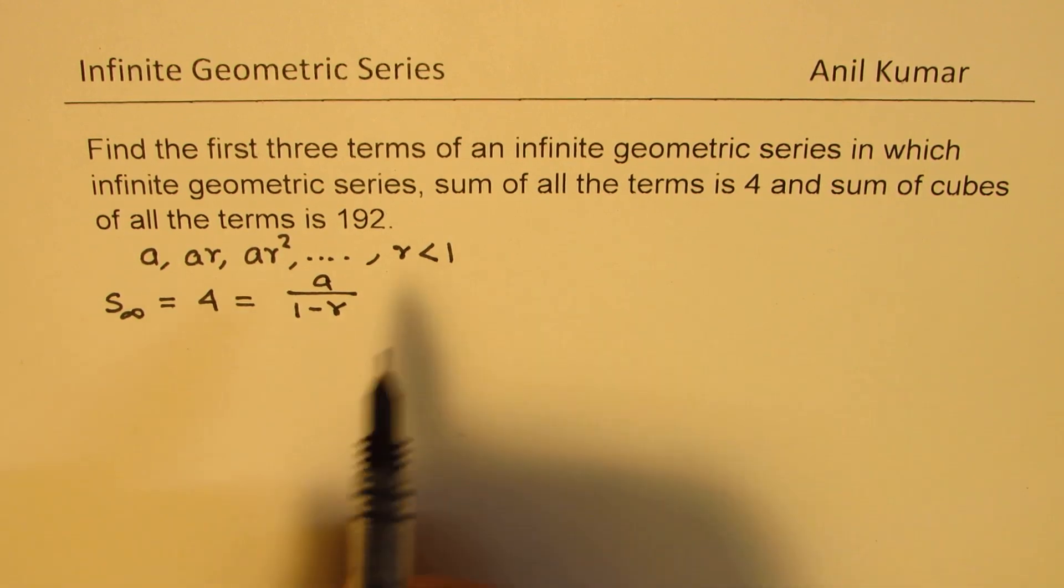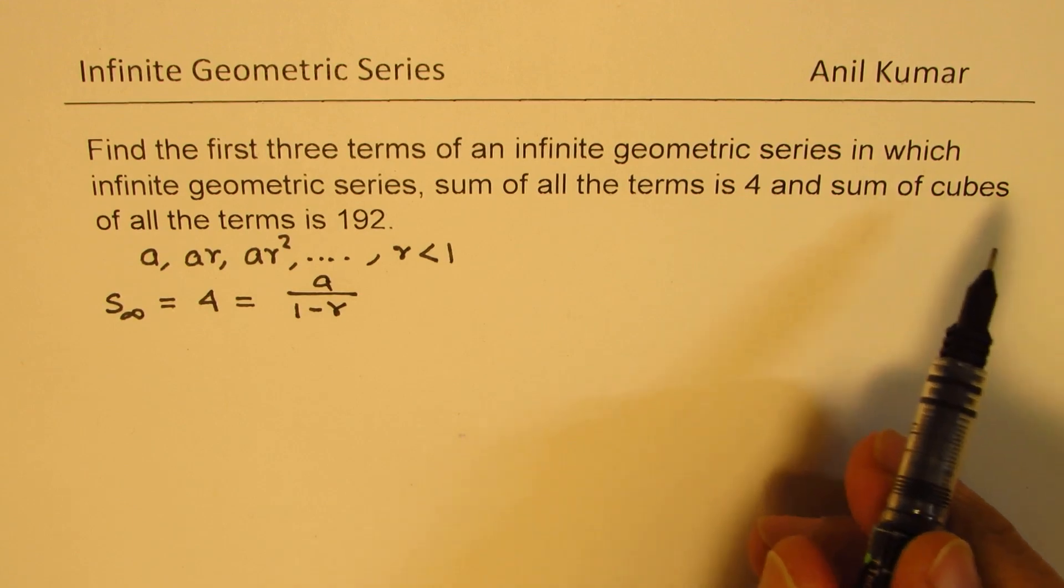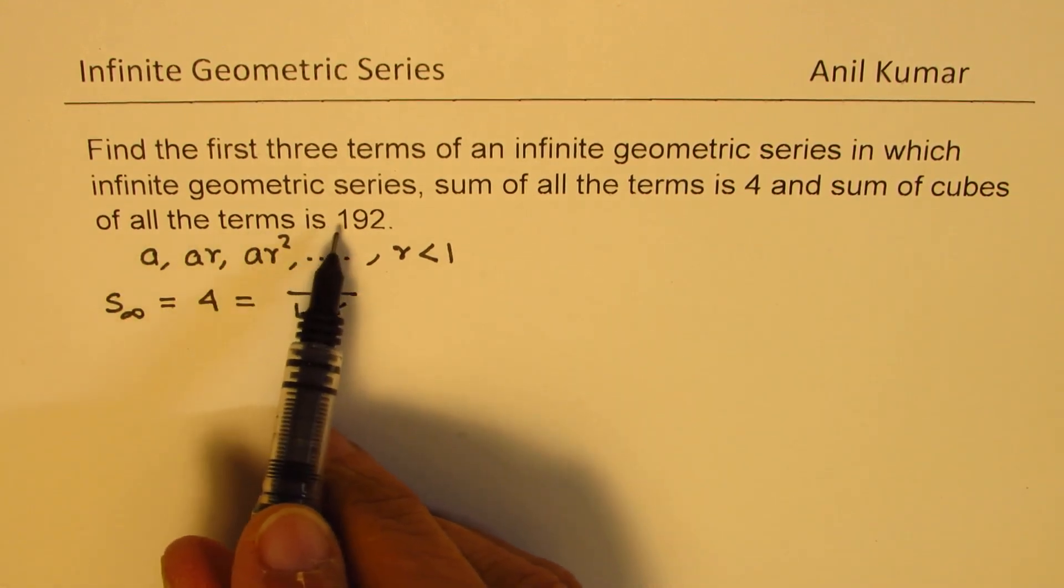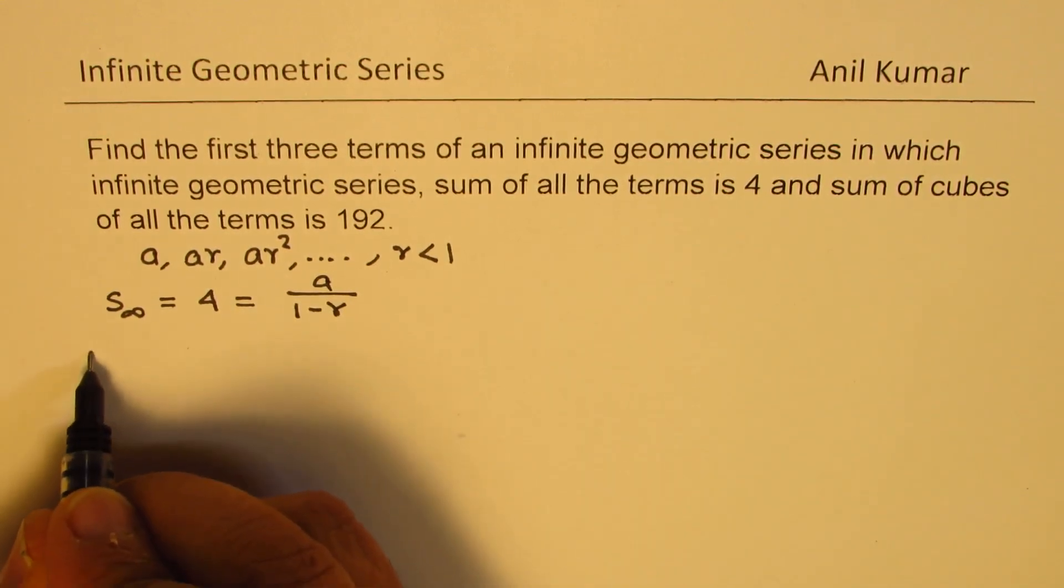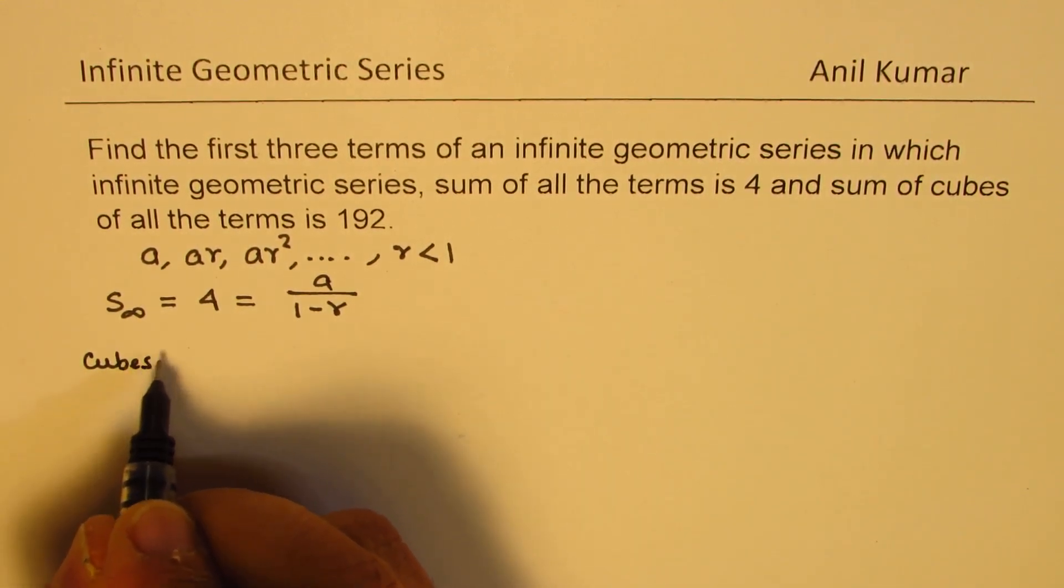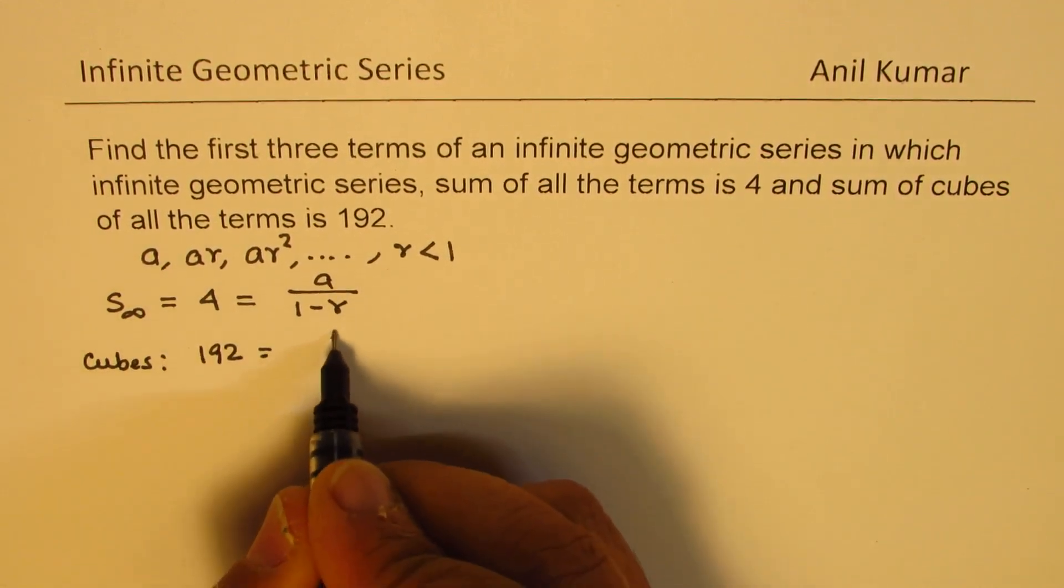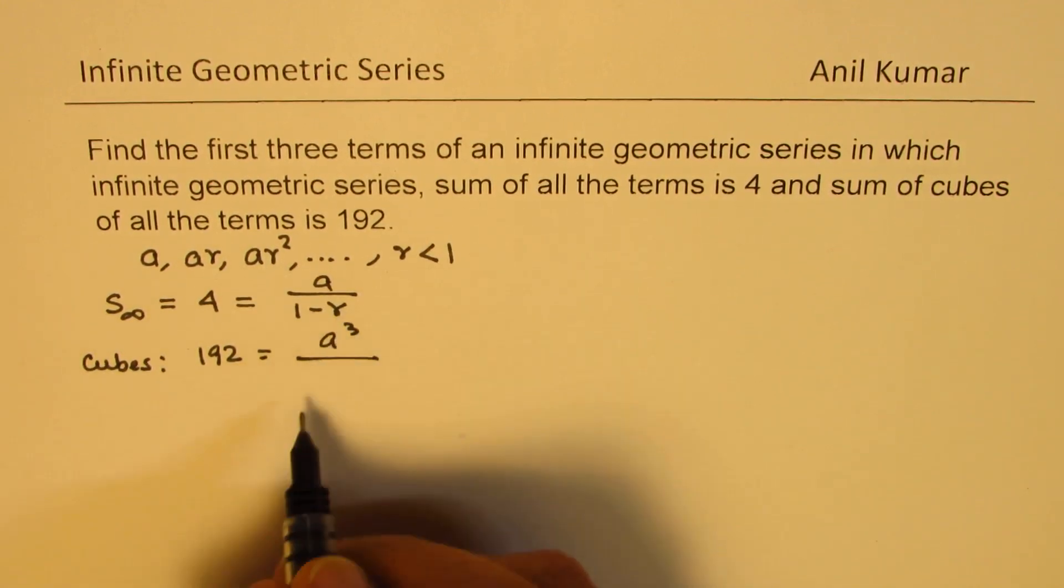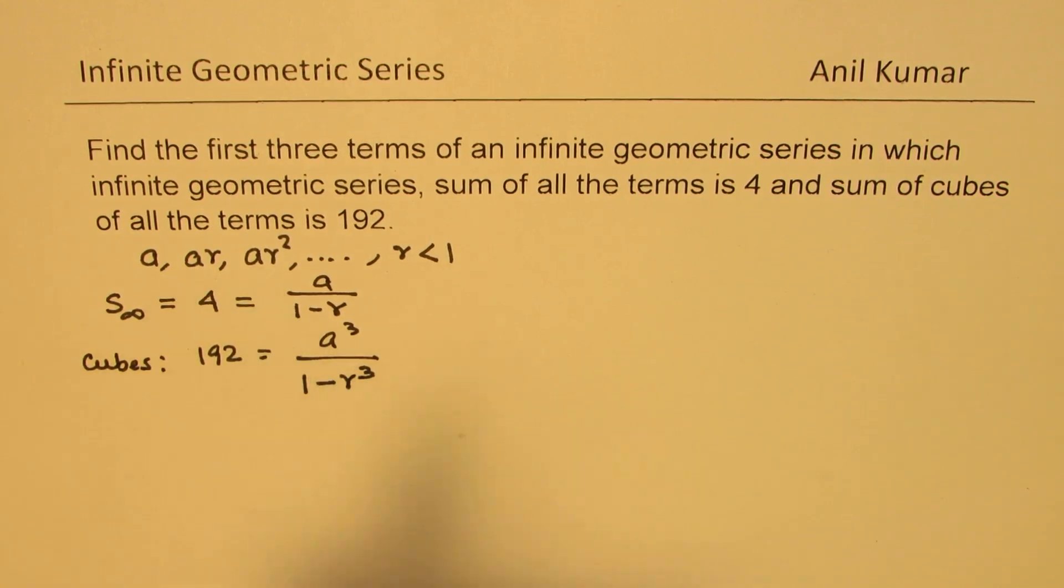The second part of this question is, sum of the cubes of all the terms is 192. When we say cubes is 192, the sum is 192. First term will be A cube and R will be R cube, so we get 1 minus R cube. These are the two formulas to work with.